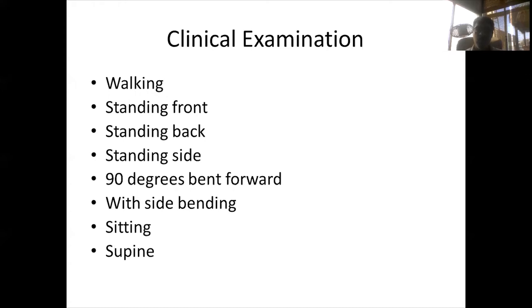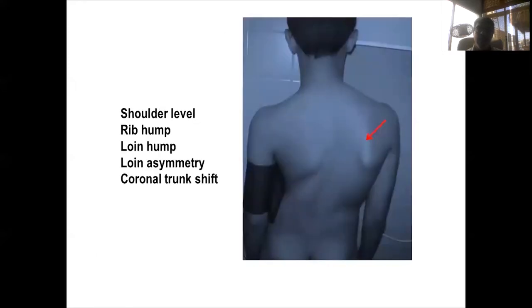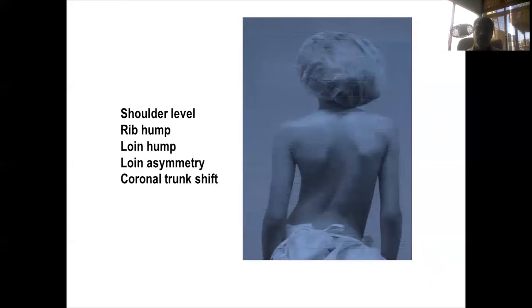When examining a patient with scoliosis, assess in different positions: observe gait, examine from the front, side, and back while standing, assess the pelvis while sitting versus standing, ask the patient to bend forwards at 90 degrees to look tangentially along the spine for asymmetric ribs, and perform neurological examination supine. Key findings include shoulder level asymmetry, scapular prominence, loin asymmetry, truncal shift to the right, rib hump, and elevated right shoulder.